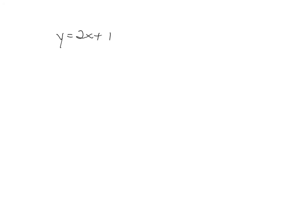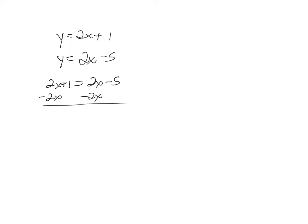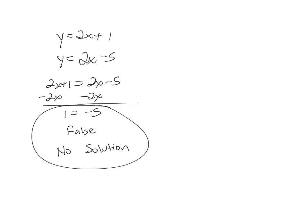Here's another problem that sometimes confuses people. I'll use substitution again because I have y equal on both equations, so I substitute 2x plus 1 for y in the bottom equation. After solving, 2 minus 2 is 0 and 2 minus 2 is 0, leaving 1 equals negative 5 — that is false. When it's false, we say no solution.